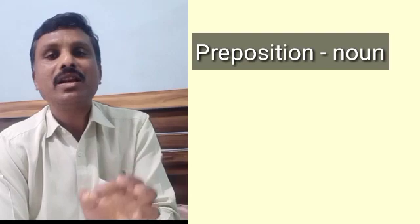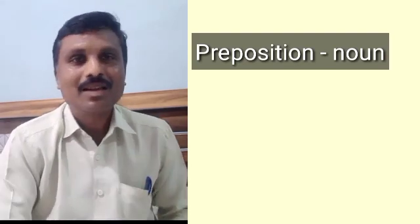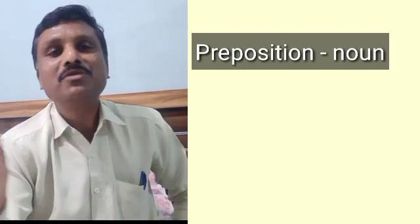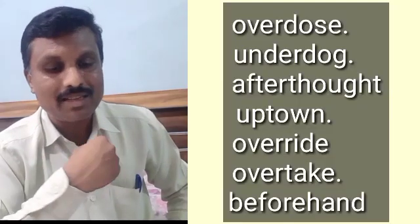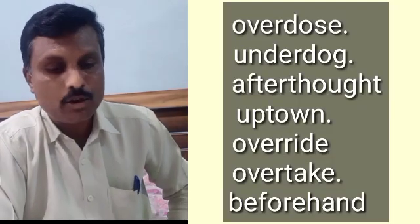Compounding is a process that can be systematically understood, because different word classes combine together to form new compound words. The first type is the preposition-noun compound, where one preposition combines with a noun to form a new word. Examples include: overdose, underdog, afterthought, uptown, override, overtake, beforehand.